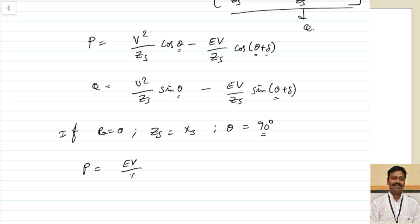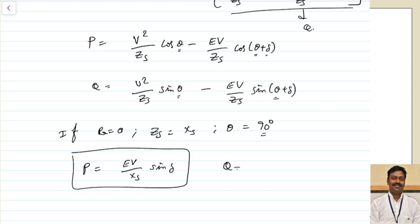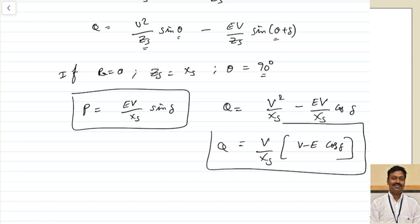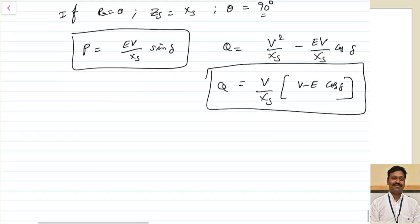With these substitutions, the active power simplifies to P = (EV/Xs)·sin δ. The reactive power becomes Q = (V²/Xs) − (EV/Xs)·cos δ, which can be written as Q = (V/Xs)·(V − E·cos δ).